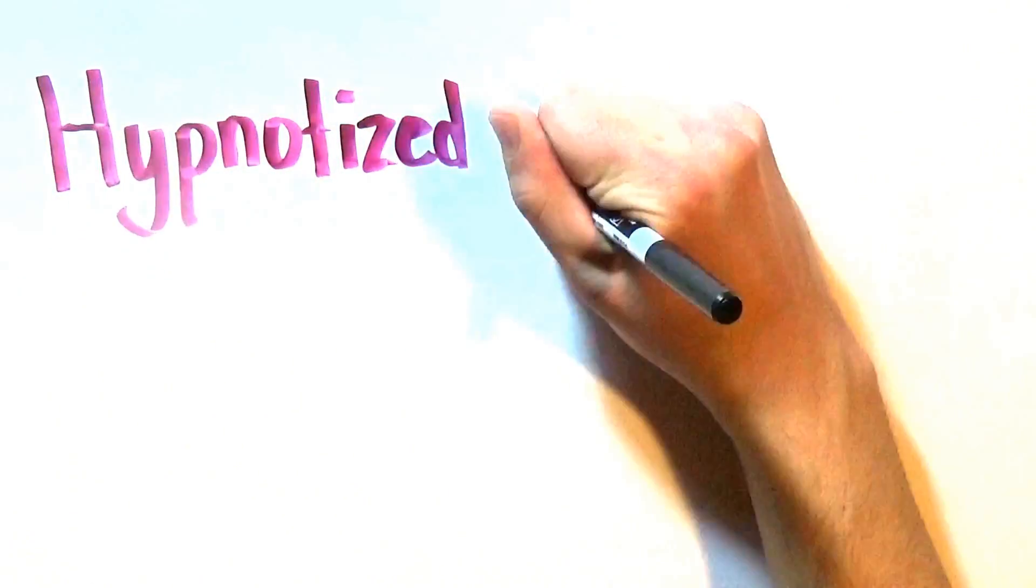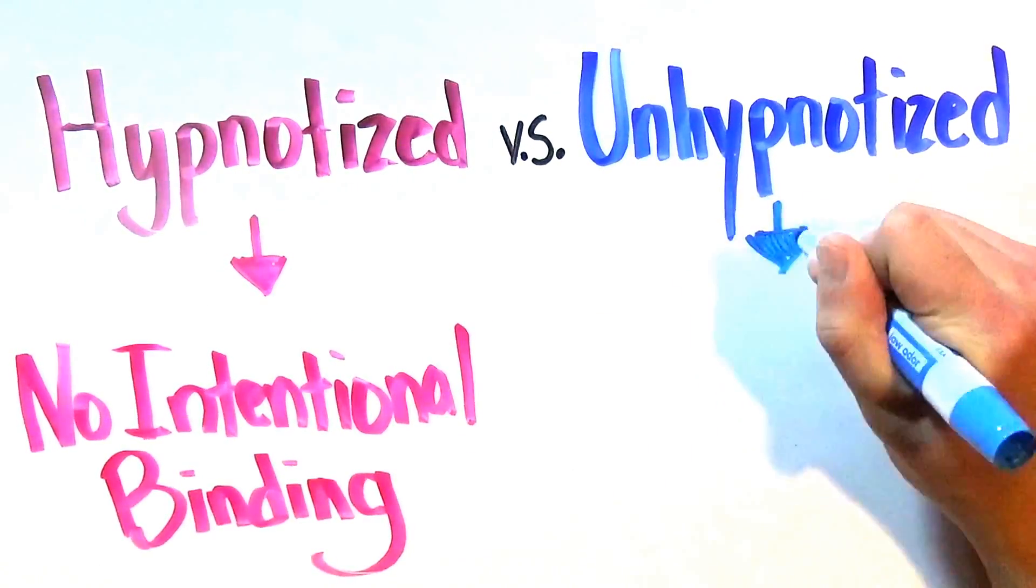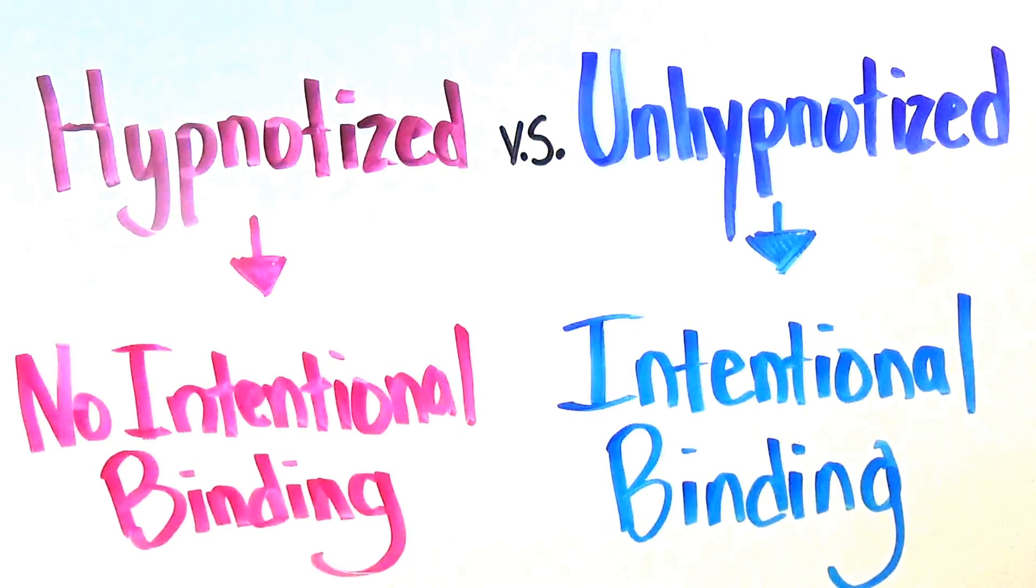When researchers used hypnotized and unhypnotized participants, they found that the hypnotized participants lost much of their intentional binding and were able to guess the time between a voluntary button press and beep much more accurately, similar to a time guess for an involuntary button press and beep, showing the hypnotized participants' loss of voluntary behavior.